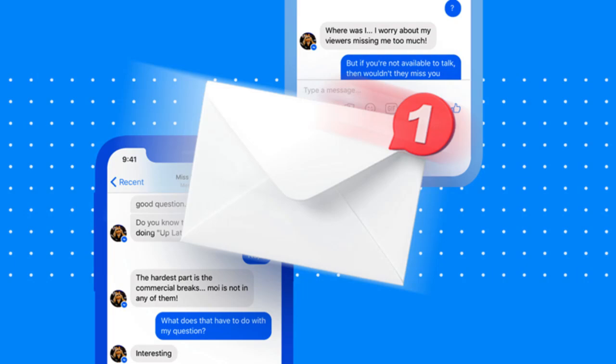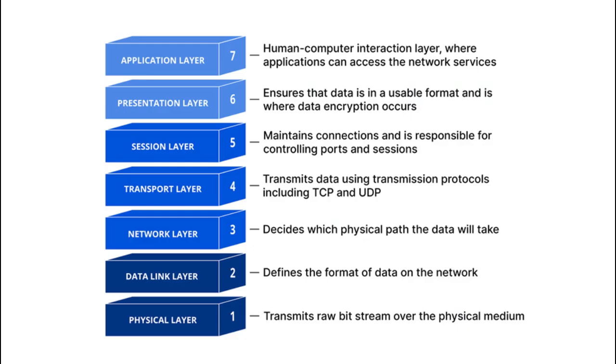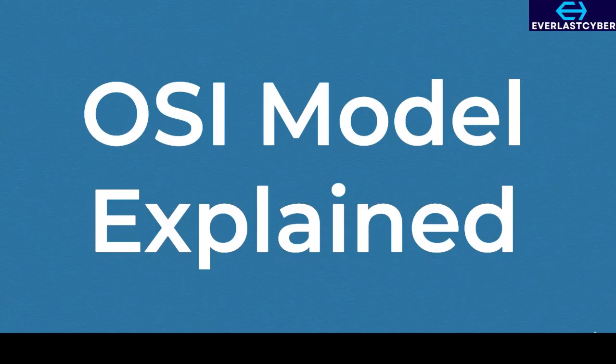Ever wondered how your message travels from your phone to a friend across the world? It's all thanks to the OSI model, the seven-layer system that powers the internet. Let's break it down in simple terms.